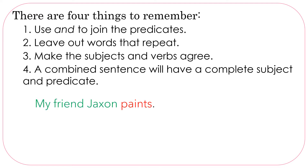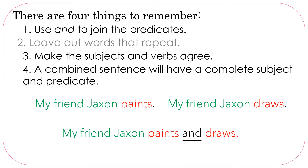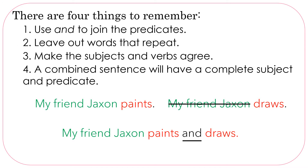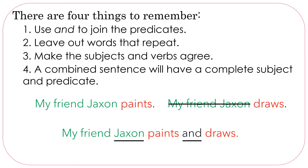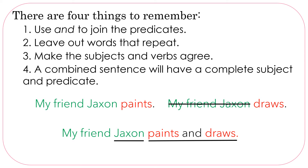In our last two sentences — 'My friend Jackson paints' and 'My friend Jackson draws' — we combined them to 'My friend Jackson paints and draws.' Did we use AND to join the predicates? Yes. Did we leave out words that repeat? Yes — we didn't repeat 'My friend Jackson.' Did we make the subjects and verbs agree? Jackson is a singular subject; paints and draws are both singular verbs. Do we have a complete subject and predicate? 'My friend Jackson' is the complete subject; 'paints and draws' is the complete predicate.